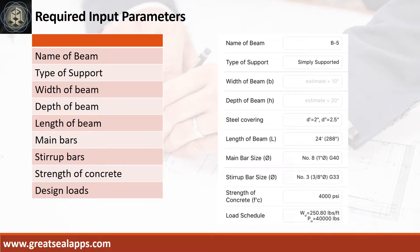Enumerate input parameters required: Name of beam B5, type of support simply supported, width of beam 10 inches, depth of beam 20 inches, length of beam 24 feet.